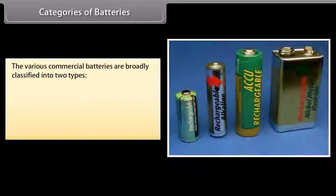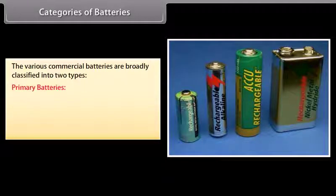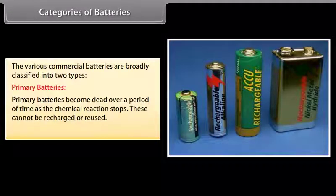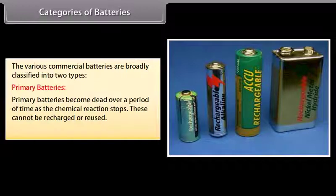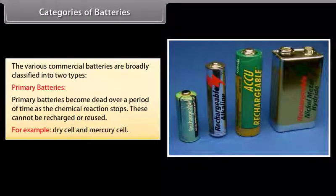Categories of batteries. The various commercial batteries are broadly classified into two types. Primary batteries: Primary batteries become dead over a period of time as the chemical reaction stops. These cannot be recharged or reused. For example, dry cell and mercury cell.